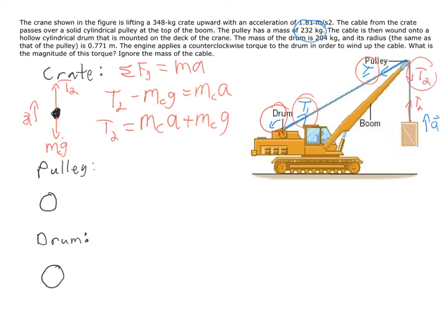Now if we look at the pulley, what's the pulley got going on? It's going to have T2 pulling down here, and then it's also going to have T1 pulling in this direction. So T2 is going to be generating a negative torque on the pulley, while T1 is going to be generating a positive torque.